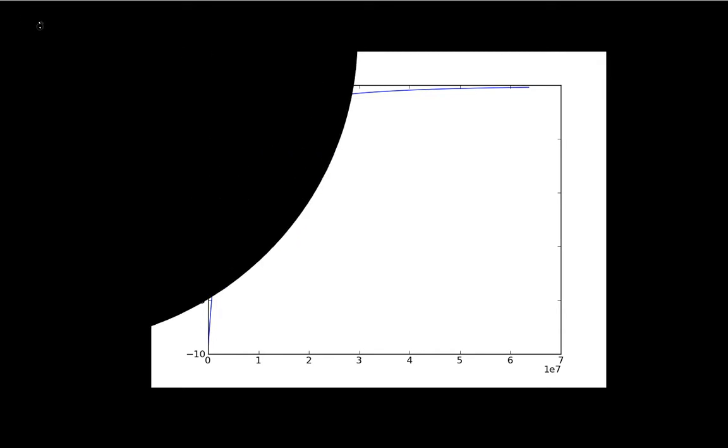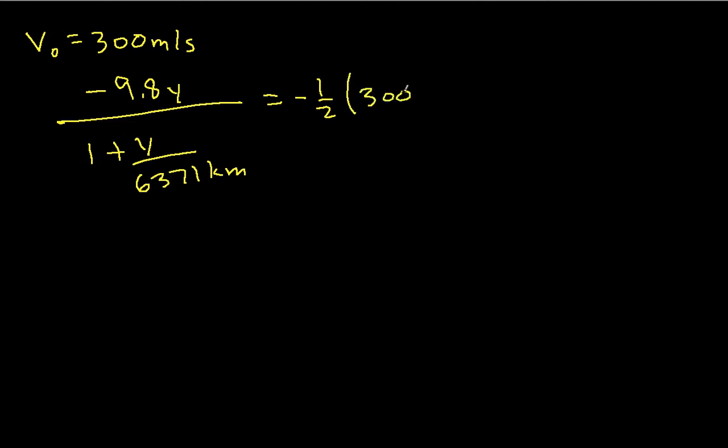Okay, so having shown you that, let's get rid of it. So, let's actually solve this then. So, what happens when my cannon fires my projectile with a velocity of 300 meters per second? Well, I have minus 9.8y over 1 plus y over 6371 kilometers is equal to minus one-half times 300 meters per second squared.